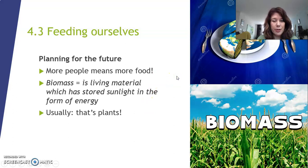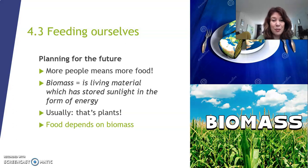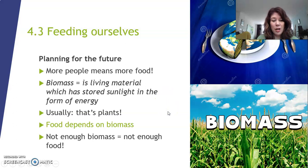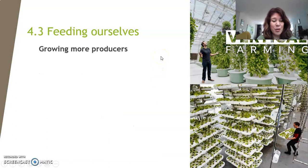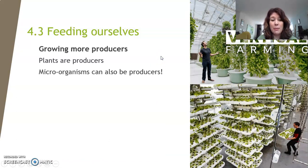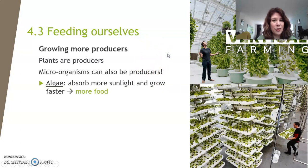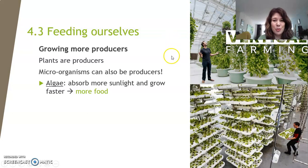So biomass is all these plants, and food depends on biomass. Food depends on plants because plants are at the beginning of the food chains and food webs. If there are no more plants, there's no more food. So not enough biomass means not enough food. We need to figure out how to create more food. We need to grow more producers — more plants. We can do that using microorganisms. Plants are producers, but microorganisms are also producers. One of the famous ones are algae. Algae can absorb sunlight just like plants, but they grow really fast — faster than plants — so they produce more food.